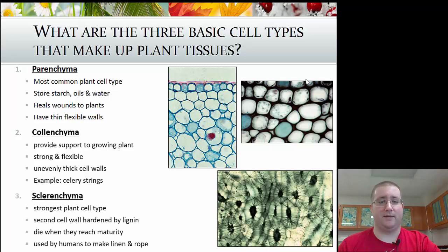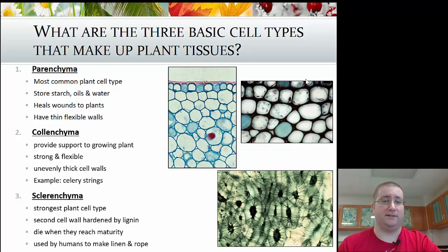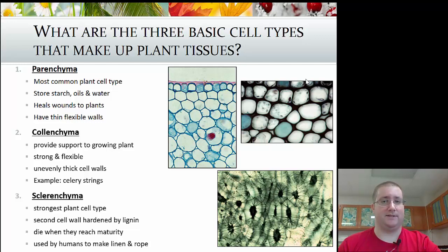The final cell type is known as sclerenchyma cells. These are the strongest cell types — they actually have a second cell wall that is hardened, making them extremely strong. They are actually dead at maturity; the cell dies and you're left with the husk, like the outside of bark. So sclerenchyma cells are really there just for rigid support. To summarize: parenchyma do most plant functions, collenchyma provide flexible support, and sclerenchyma provide rigid external structure.